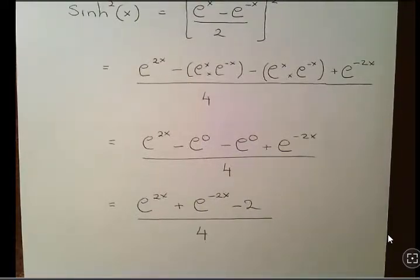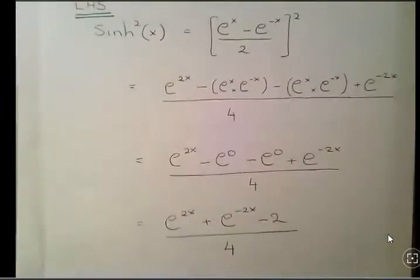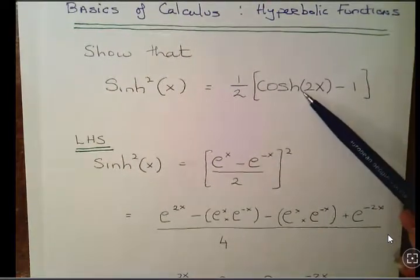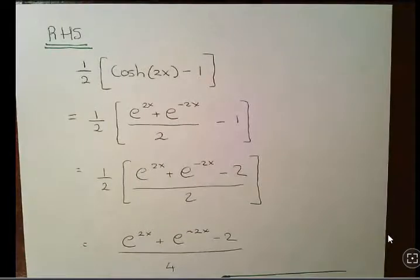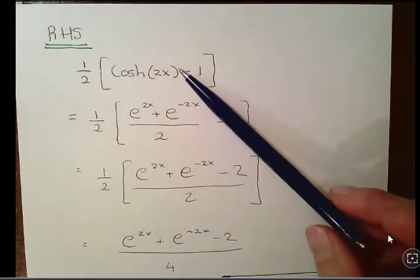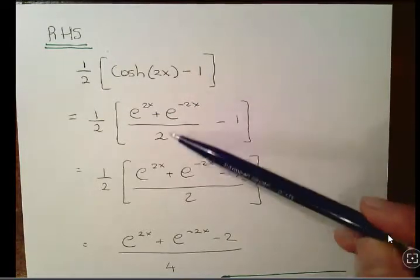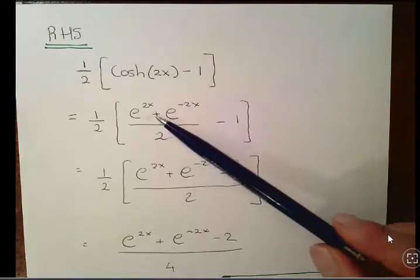Now I am going to go to the right-hand side. So I'm going to work on this now. Let's start it up there. We start off with a half of cosh(2x) minus 1.